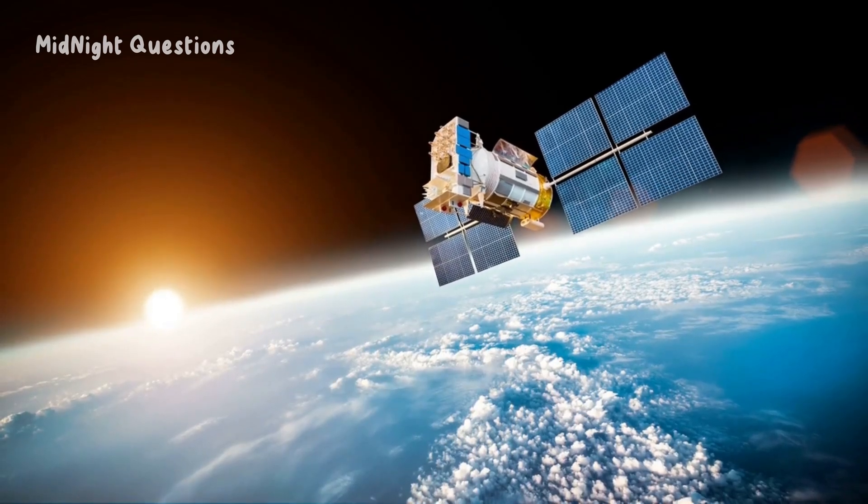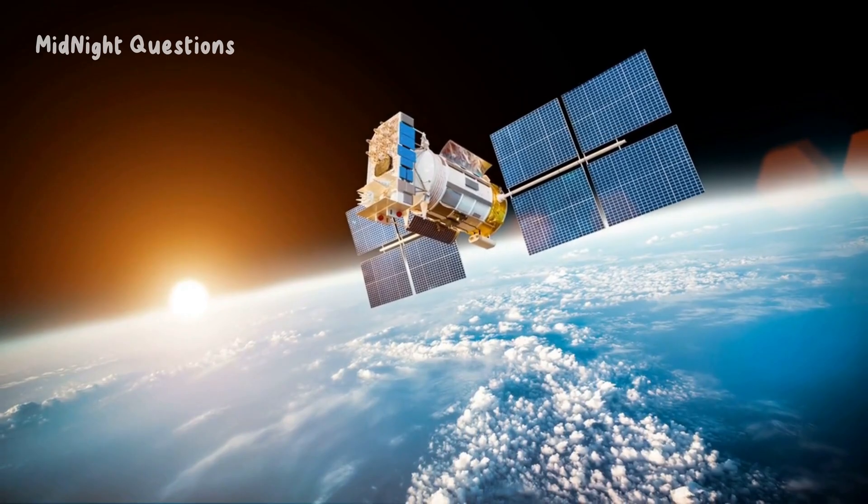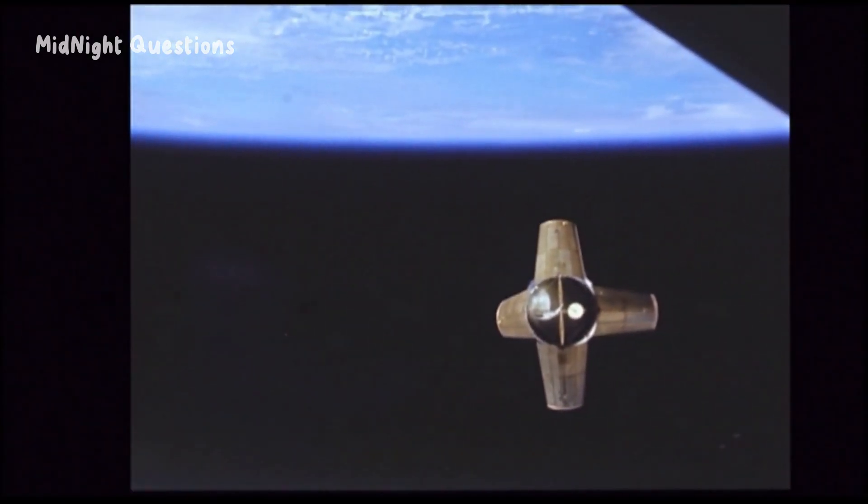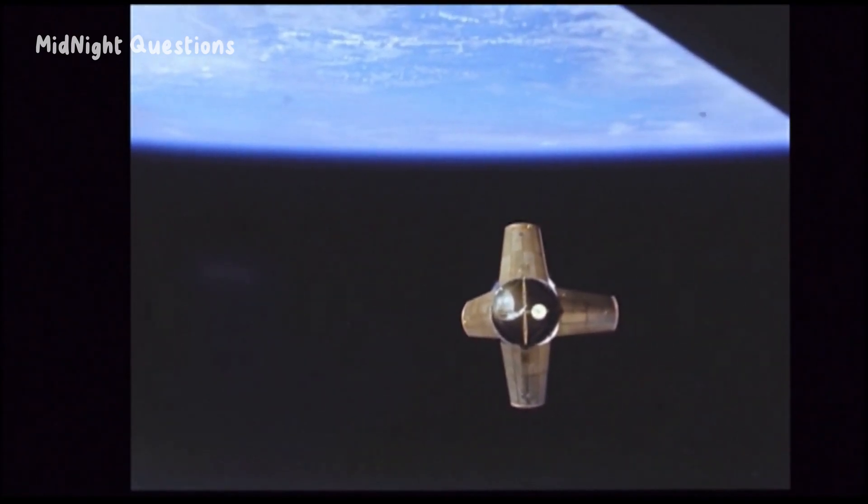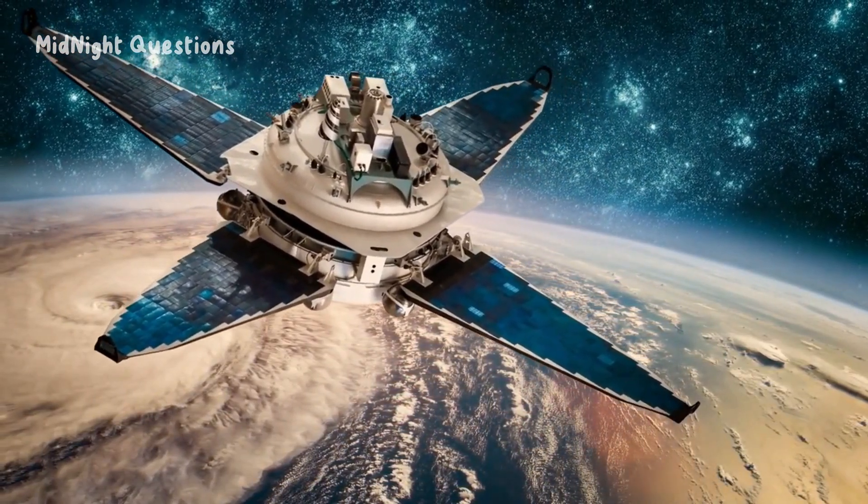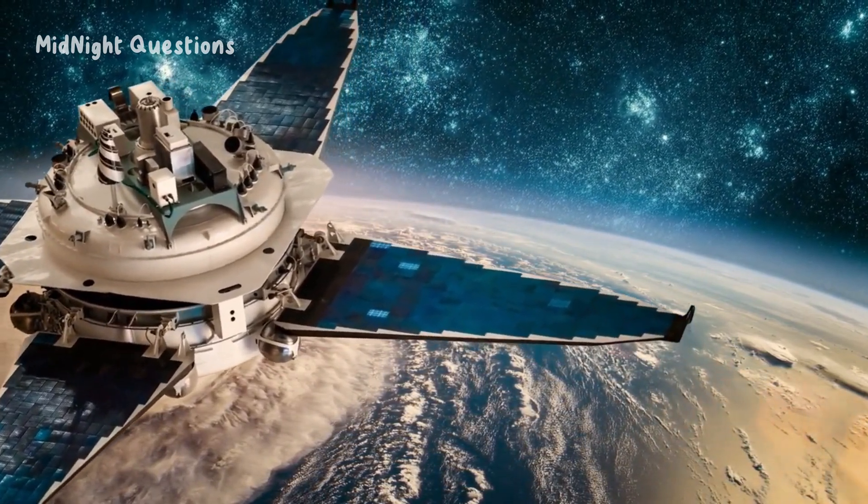Space junk consists of all the man-made objects in orbit around the Earth that are no longer useful or functional. This includes everything from old satellites and spent rocket stages to tiny fragments of metal and other materials that have broken off from larger objects. While each individual piece of space junk is insignificant, together they pose a significant threat to satellites, spacecraft, and even astronauts.